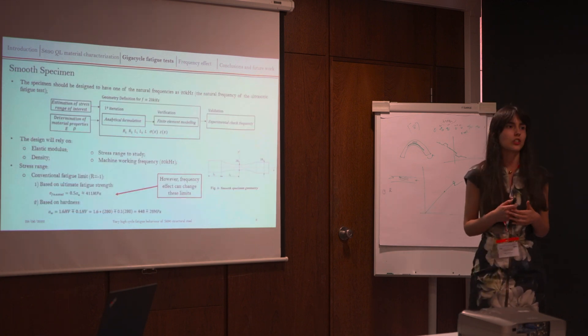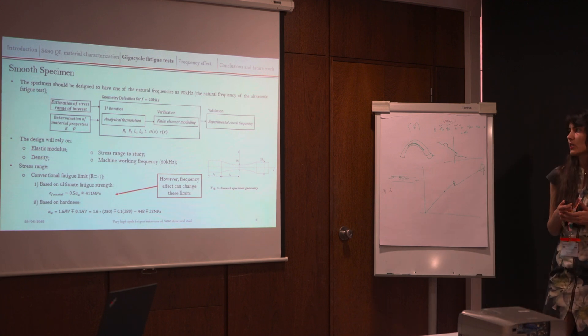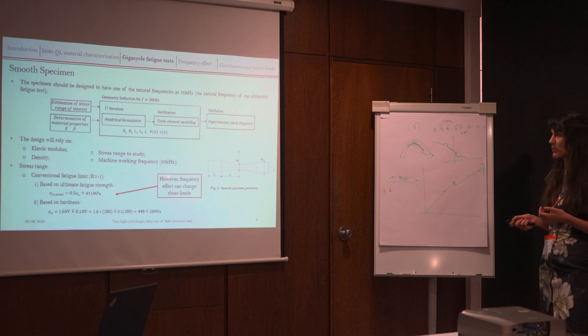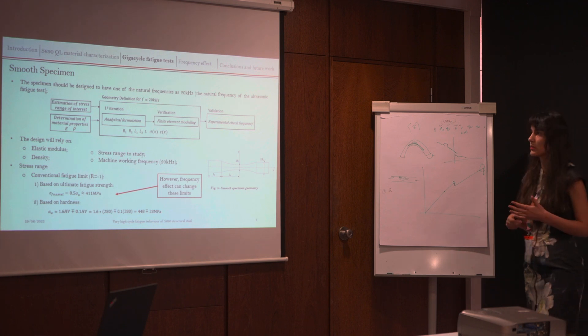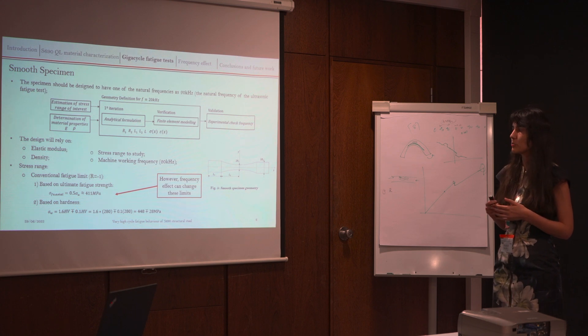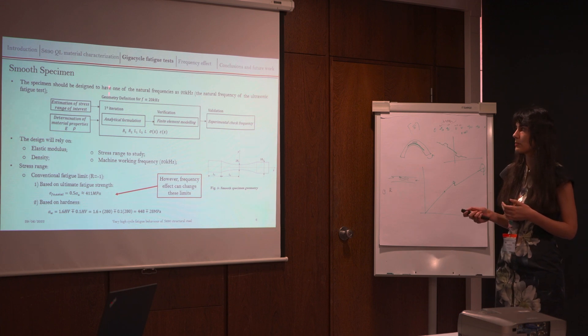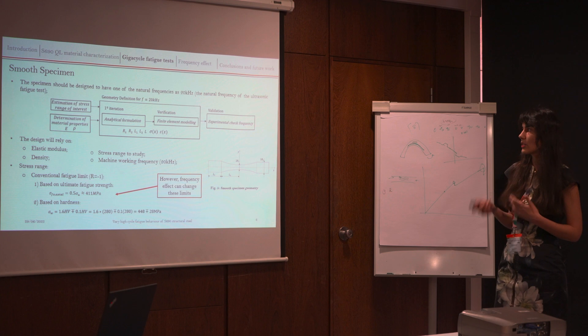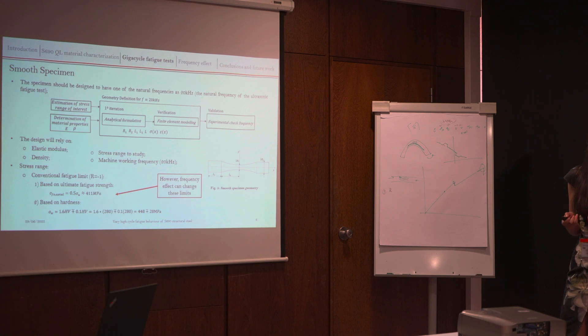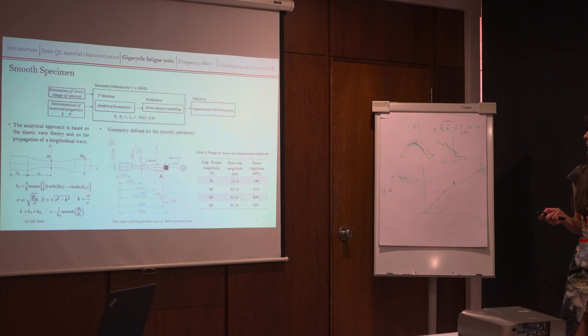One limitation of this machine is that it only can perform tests at stress ratio minus 1. So here I have the main methodology that we follow to design our specimens. As usually we do for every kind of test, firstly we estimate the stress range of interest. You can see here our estimation. Of course, we also have to think about the frequency effect that in fact we observed. And then we have a first iteration based on an analytical approach that is already well known and was developed by Bathias. And then we also developed a finite element model to verify it. But of course, at the end we need to verify it experimentally.